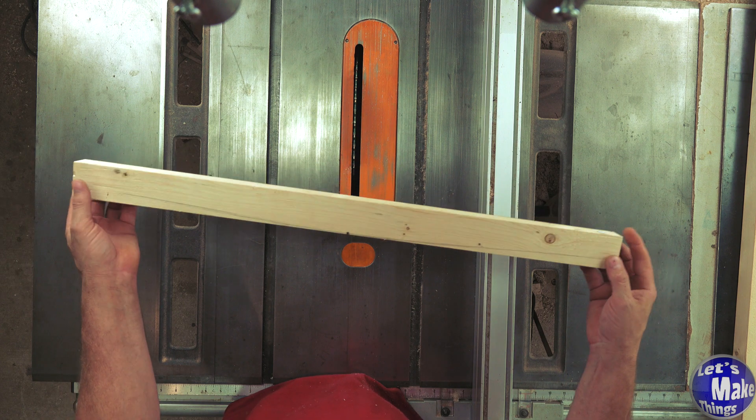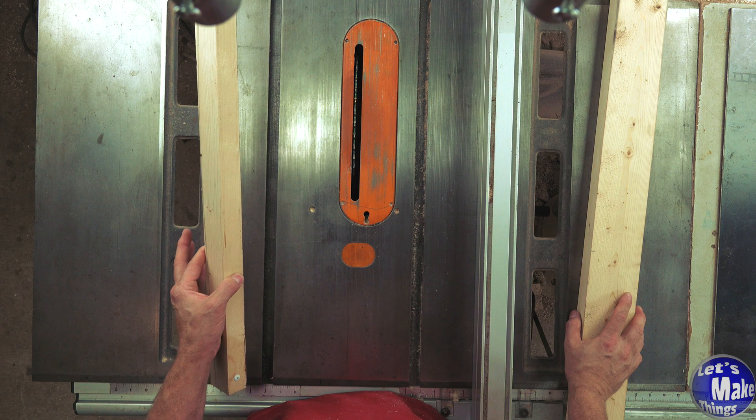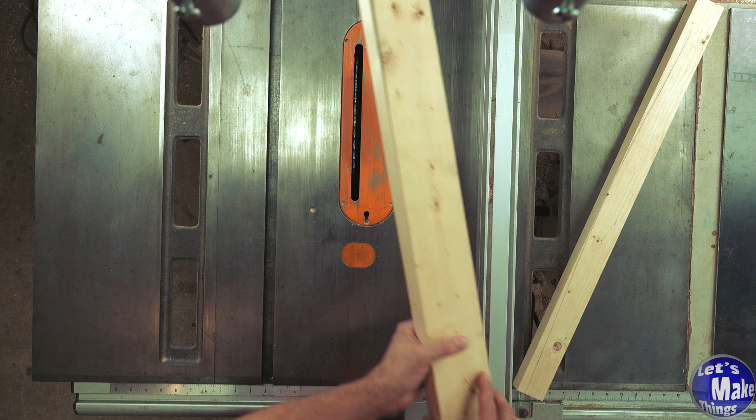This method works up to about 30 inches and the thickness of your stock shouldn't be any less than an inch and a half. But let's say you have a six foot wide wall you're building and you need cauls that are six and a half feet wide to clamp across the entire surface.